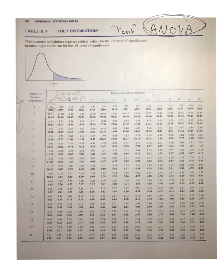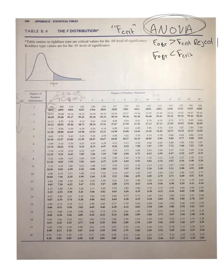The same premise holds here as with T and Z: as long as our F obtained is larger than, or finds itself in the critical region versus the F crit, you can reject your null hypothesis. If the F obtained is not in that critical region — so it's less than our F crit — we fail to reject the null hypothesis. Nothing new here; this is the same thing we've been doing with T and Z, now we're just calling it F for ANOVA.